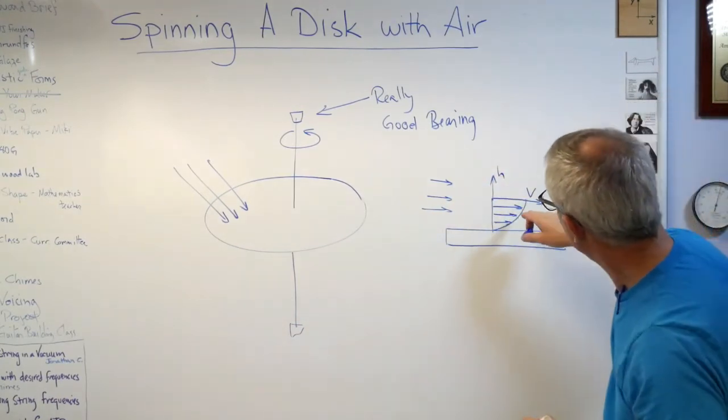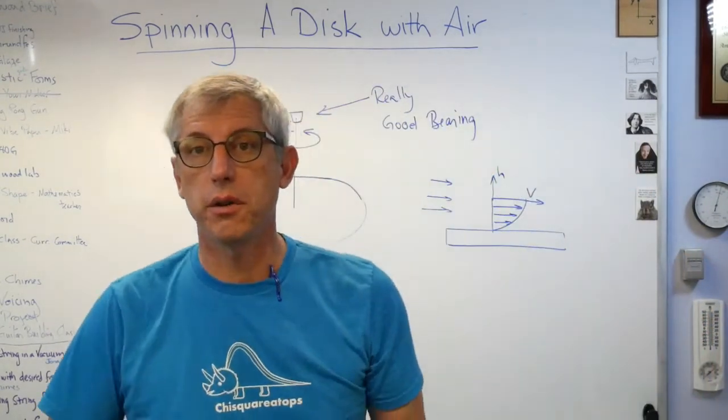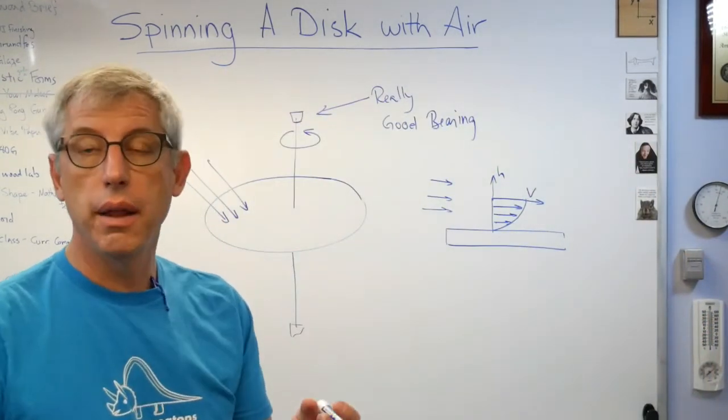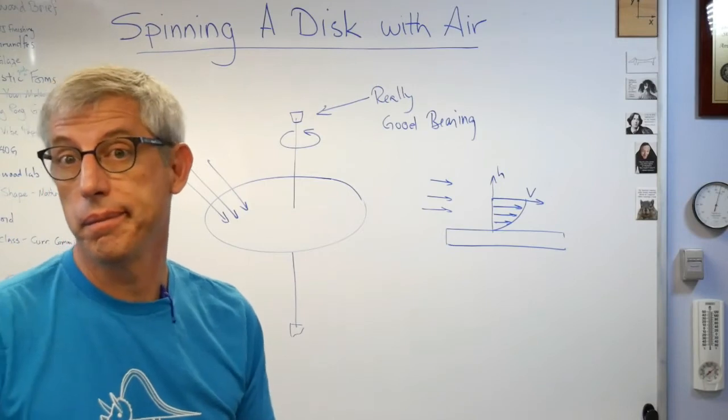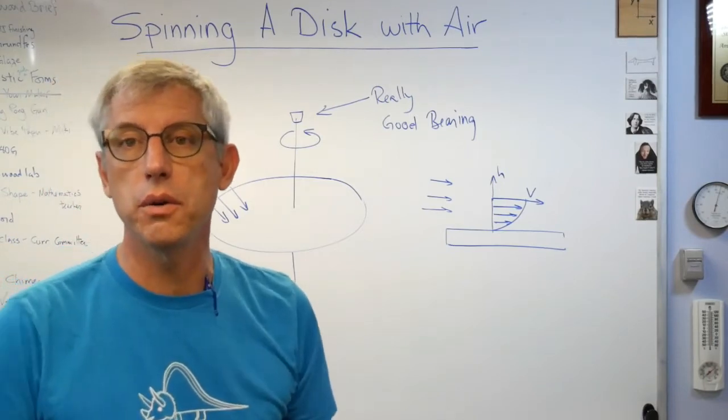To see what this would look like, here's the disk up close. The rod's back here somewhere, so we're looking in this direction. If the air flows in like this, just like it did on that little plane drawing I just had, there's going to be a boundary layer and it's going to look like this.